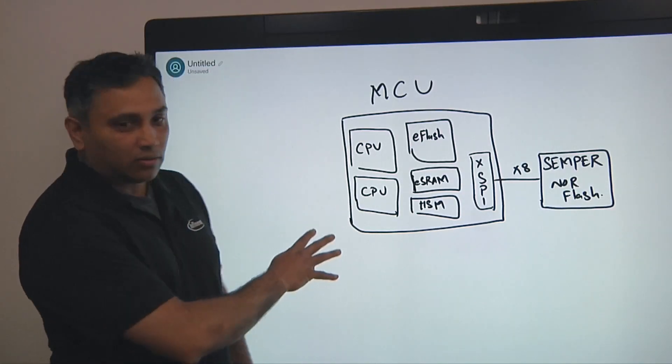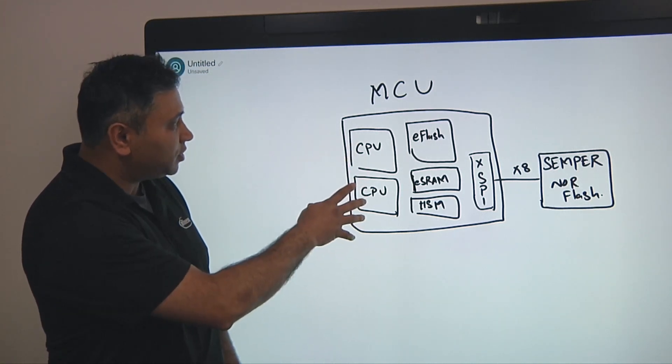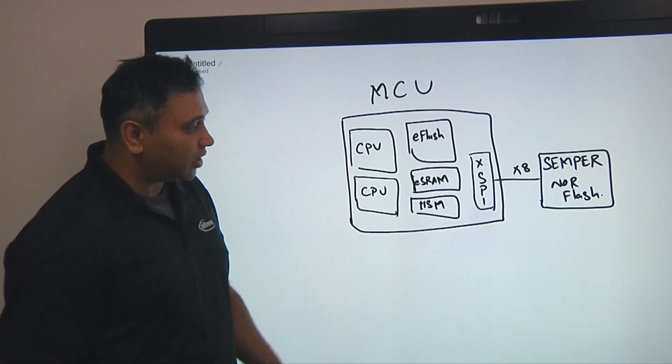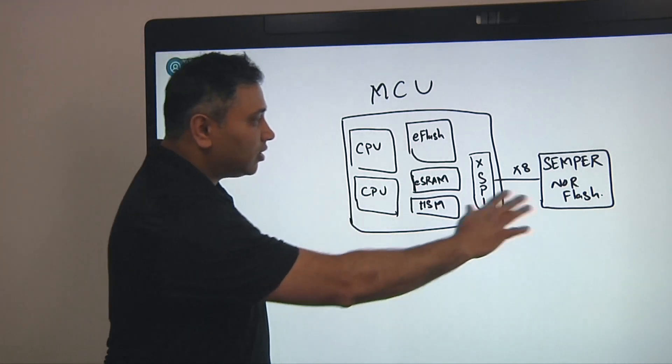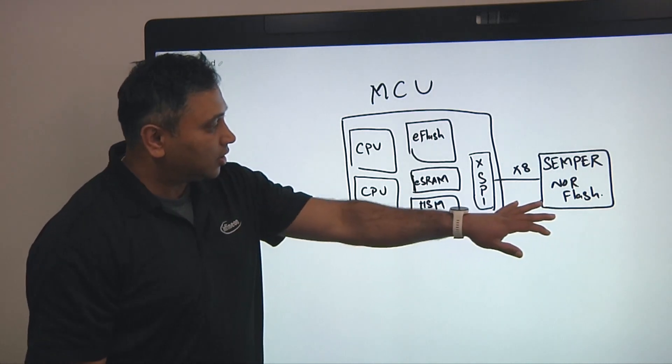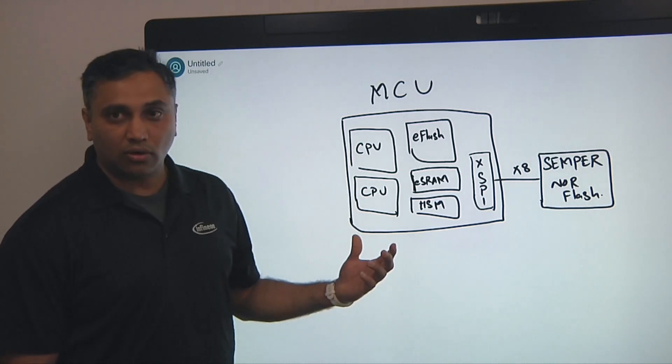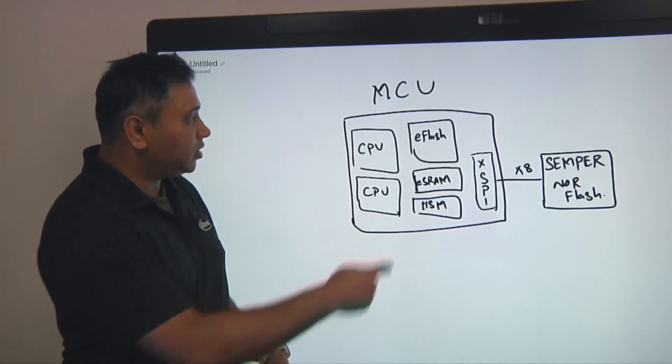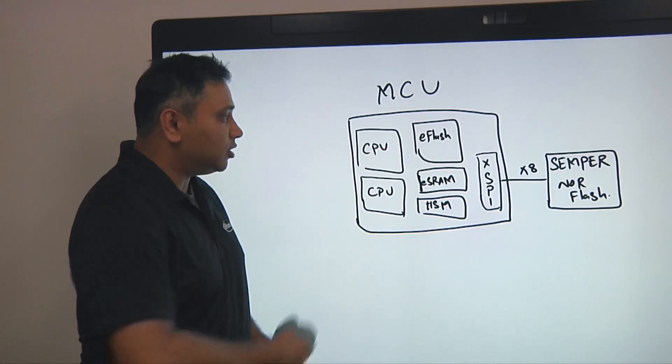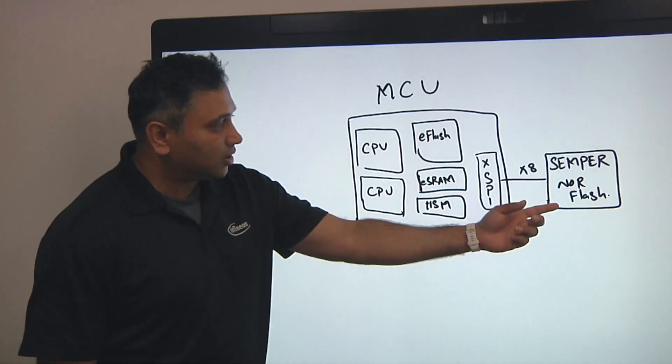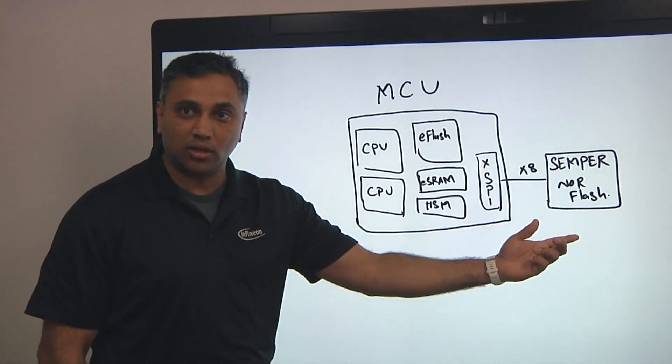Yeah, so this is how the classic MCUs today look like in an ECU, where you have multiple cores of CPUs. They have an embedded flash, you have an SRAM, you have a security module. And they depend on an external memory through an OctalSpy, XPy interface, where you can execute code from. So where does the code get executed? You keep all the code in the internal embedded flash, you execute through the CPUs, and when you need something external for over-the-air updates or storing data, you use an external memory.